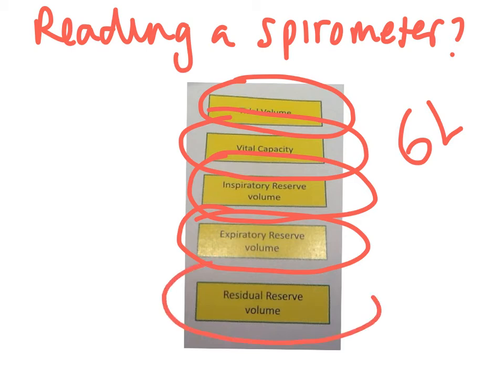The fifth key term is residual volume. Once you've measured your vital capacity — breathing in your largest breath and then breathing out again — the residual volume is the amount of air still left in your lungs after your largest exhale. In order to understand and read the spirometer, you do need to understand all five of these key terms.